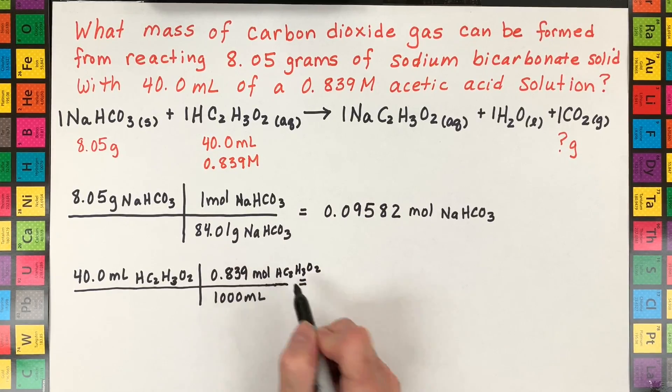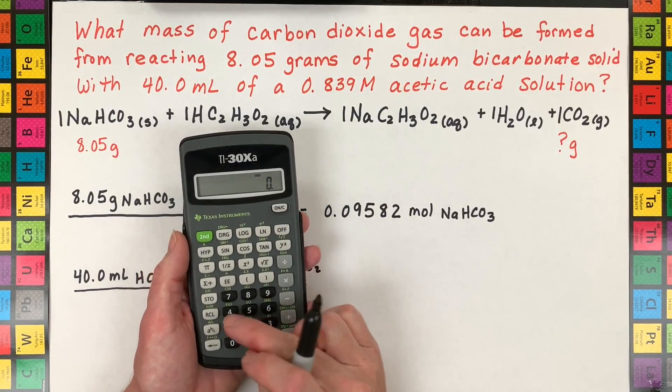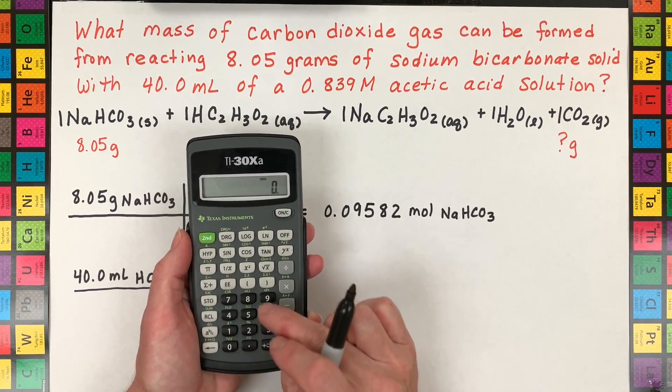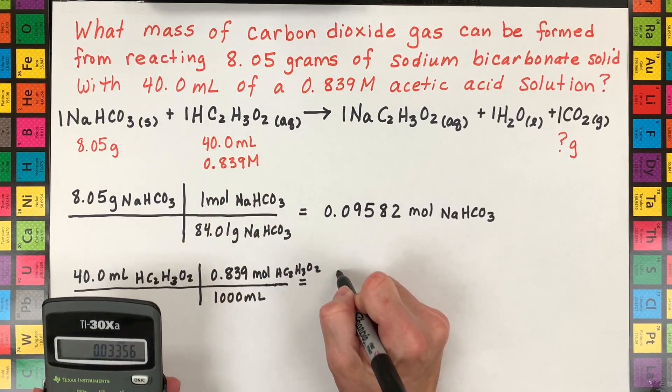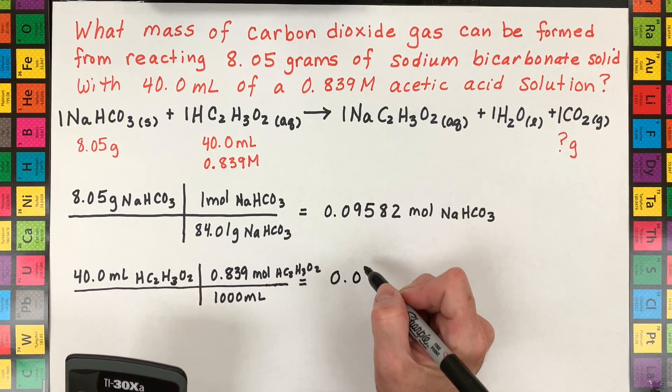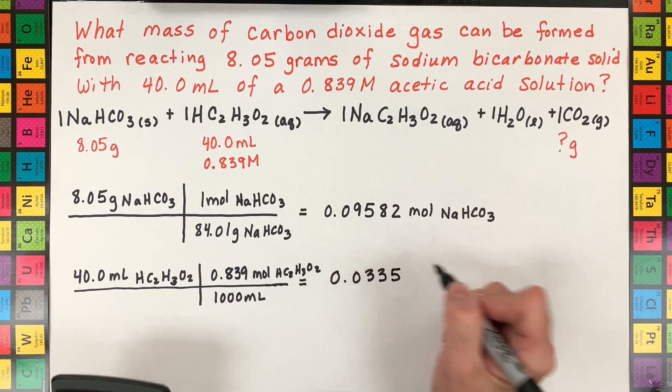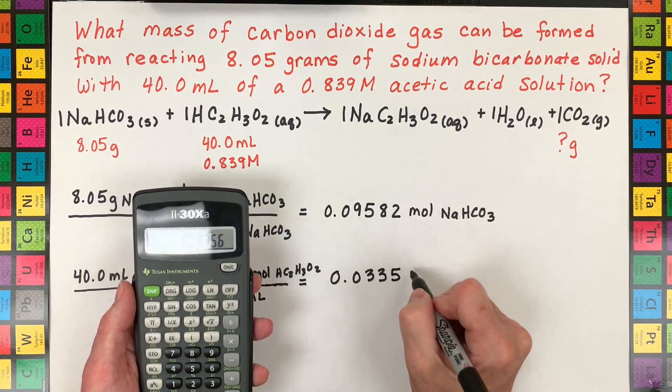It's 0.839 moles of that acetic acid molecule. Okay so then the next thing is going to be calculating the moles of that. So take 40 divided by a thousand and times 0.839 and we have a mole amount of 0.0335 and then I'll carry the six.